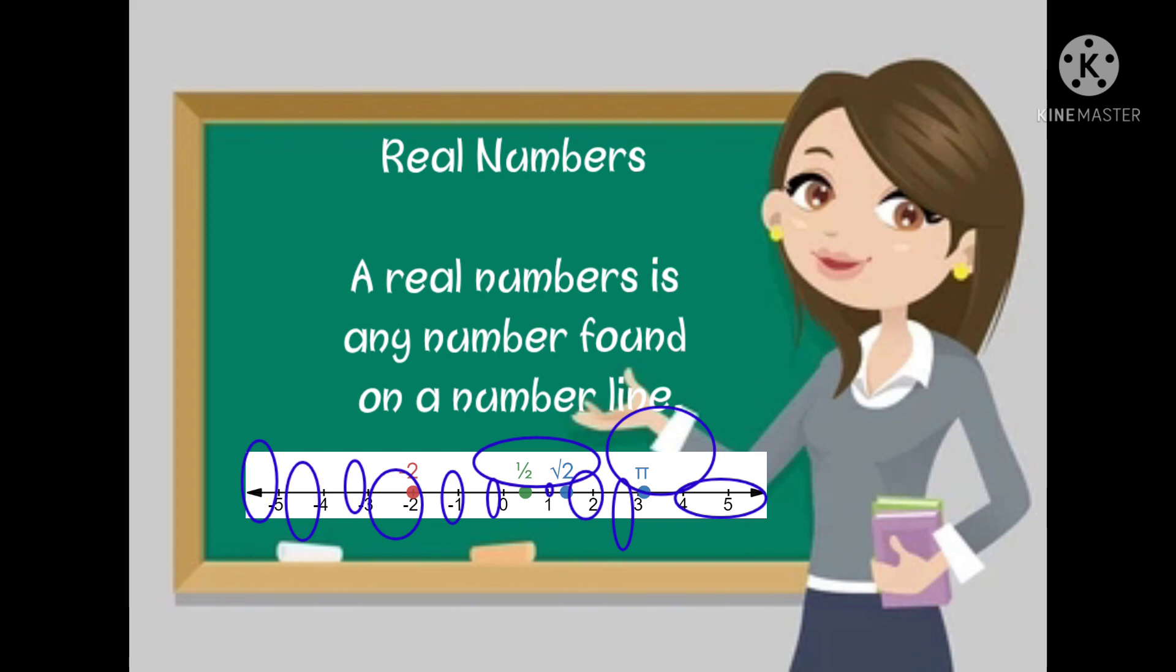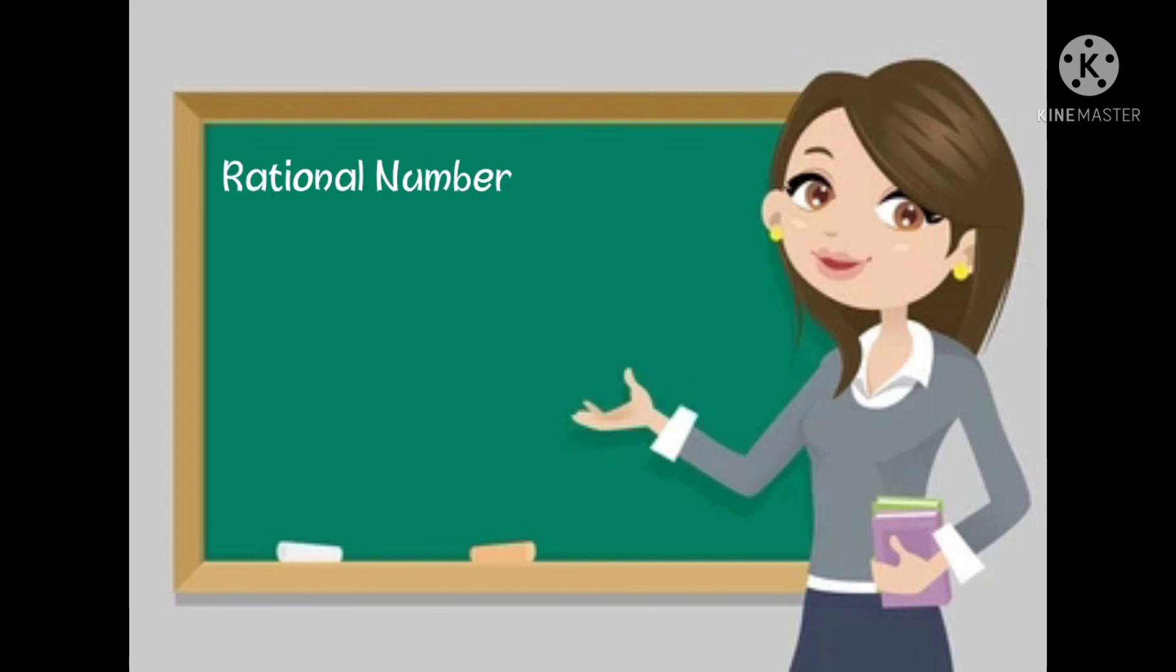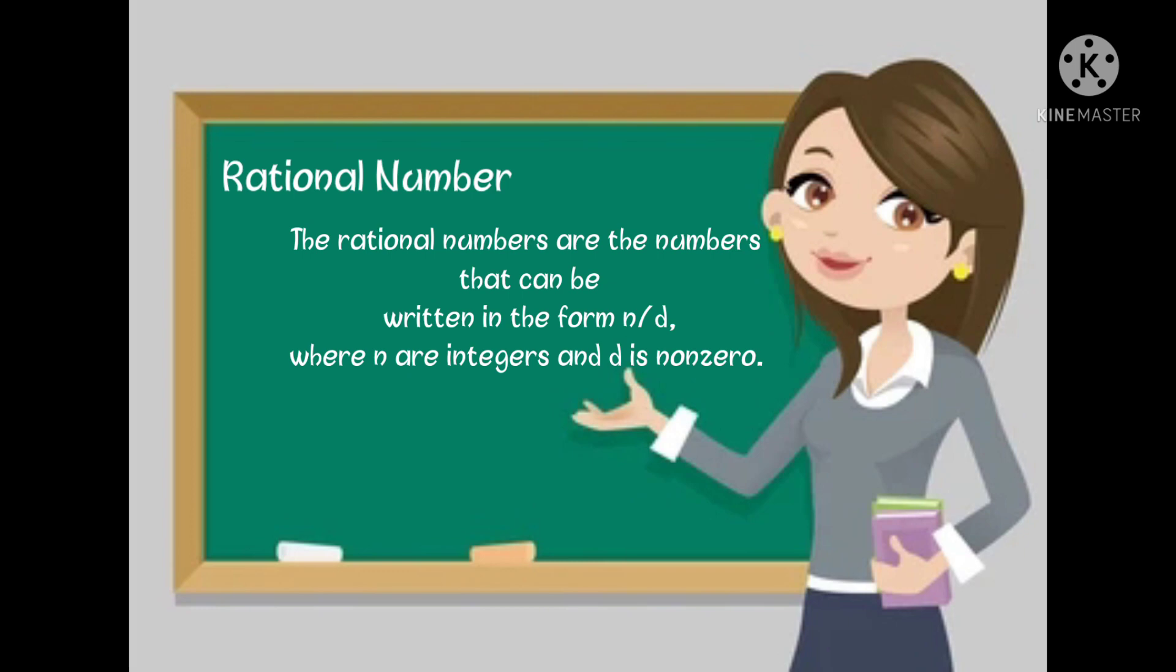Rational number: The rational numbers are the numbers that can be written in the form n/d where n and d are integers and d is non-zero. Let's see the examples: 3/7, -2/5, 4/1 = 4.